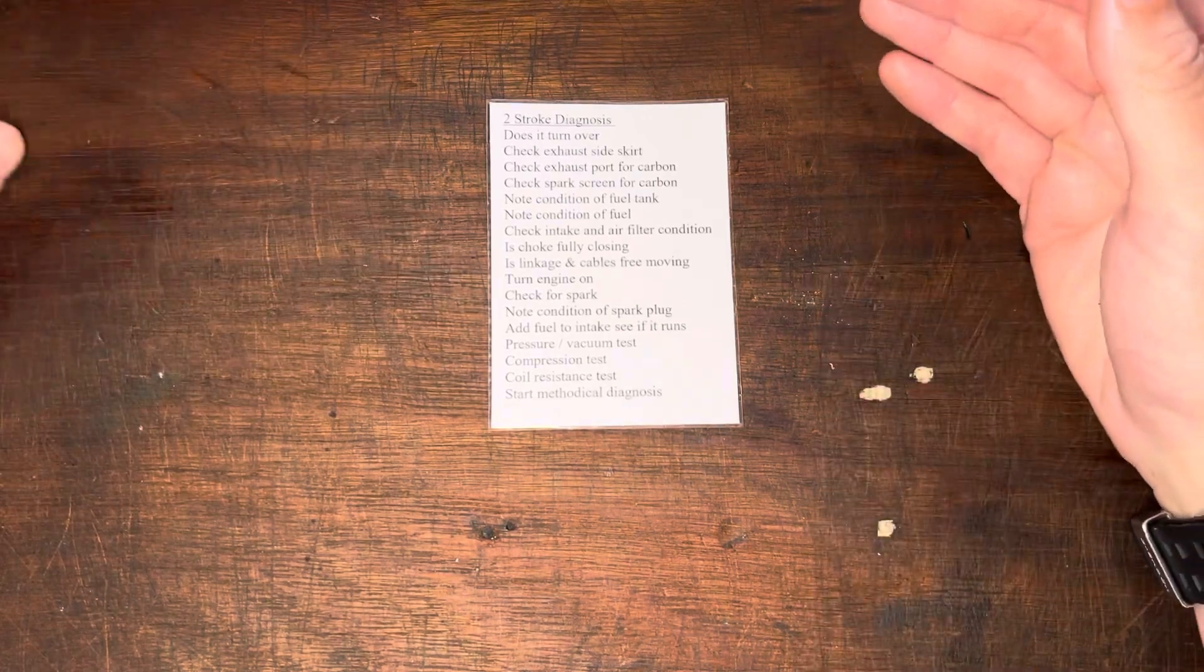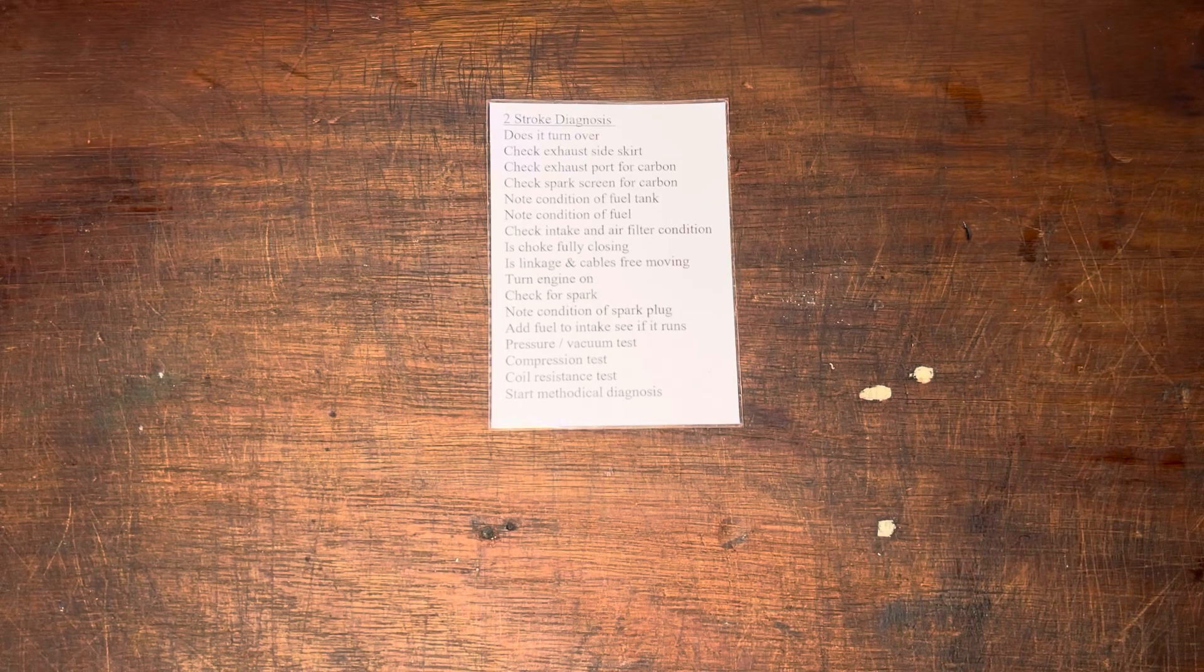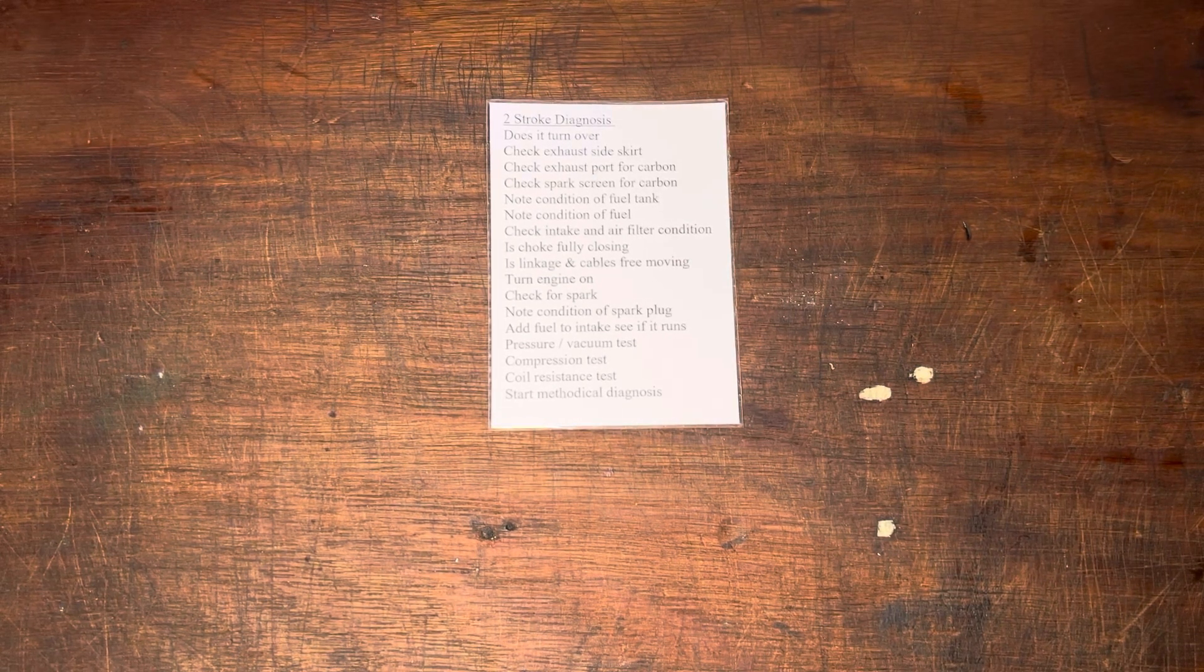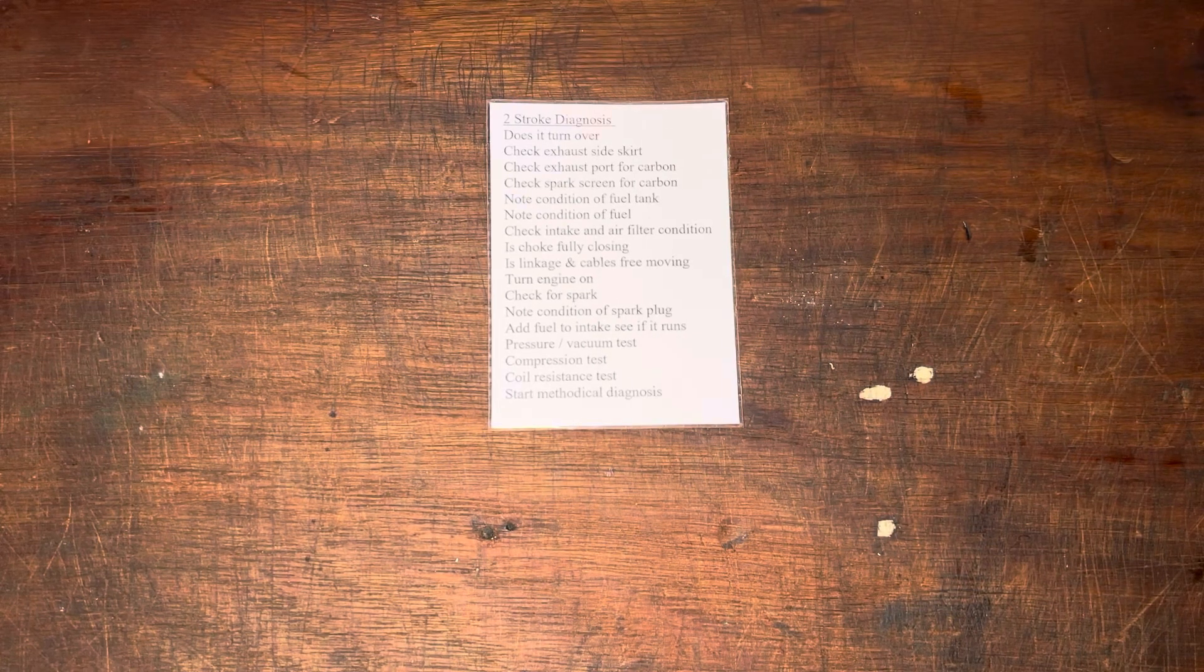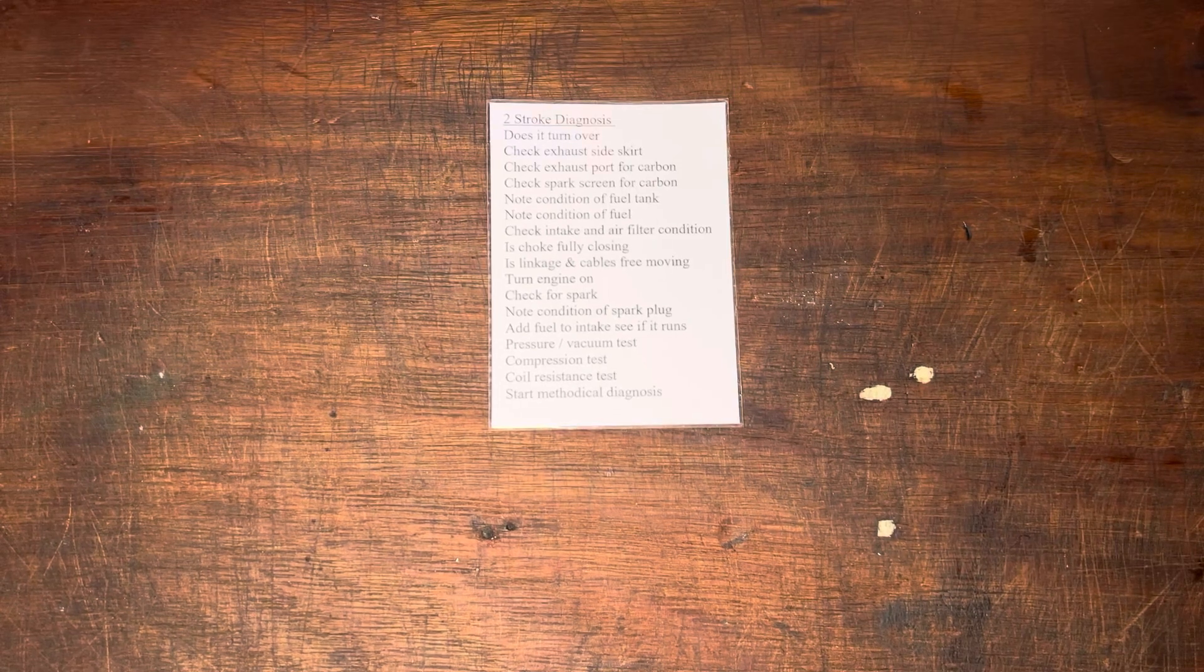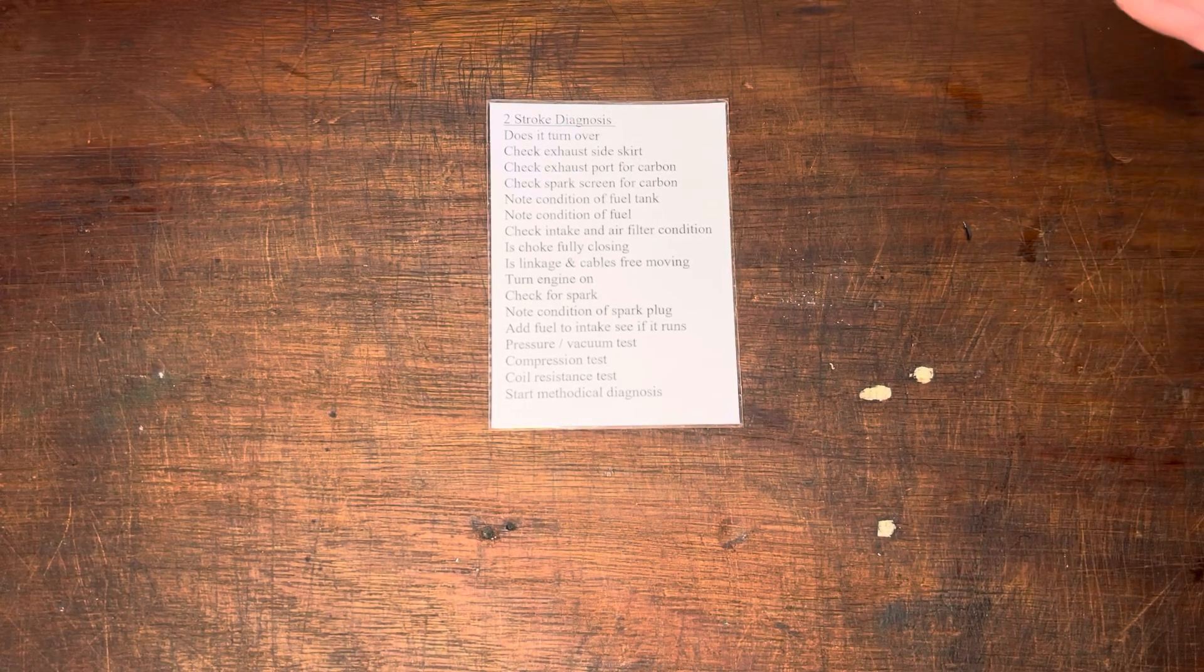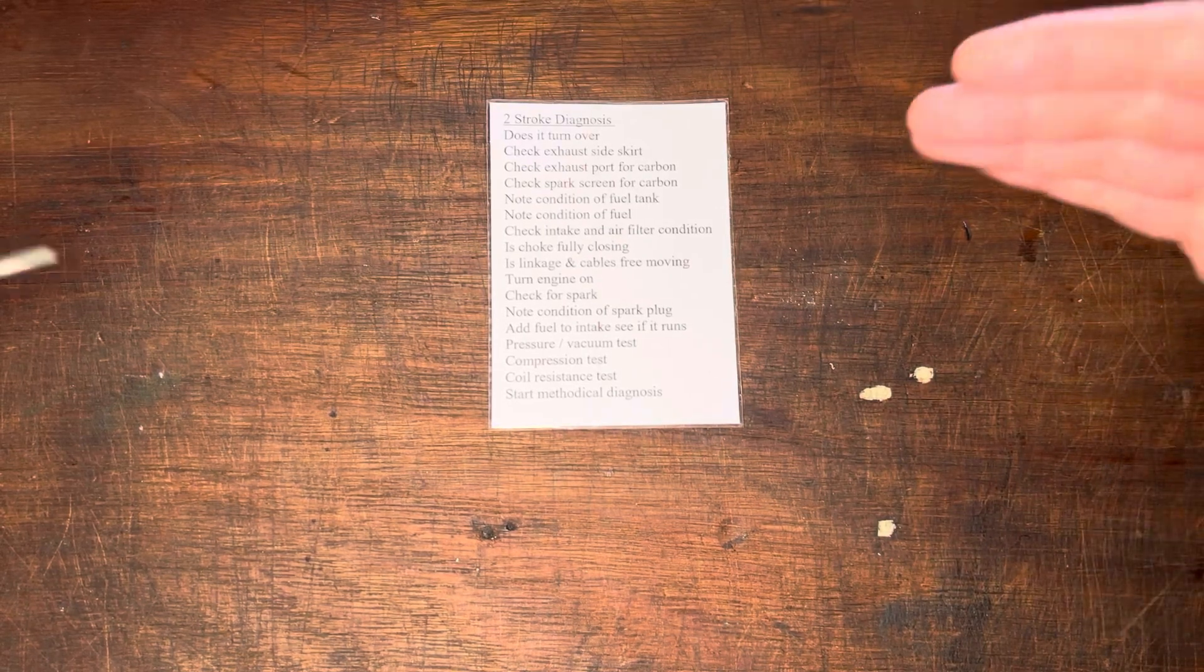And then start your methodical diagnosing. So if you see that there is scoring on the skirt, that's one thing, but why is it scoring? What's caused it? What's led to it? Just running over a few options. It could just be poor stale fuel. It could be a lack of lubrication. It could be overheating. It could be poor tuning. And then you'd find out what is, of course, maybe it's just as simple as a blocked fuel filter. So that's when you go into a bit more detail. And I've written down, start your methodical diagnosing.